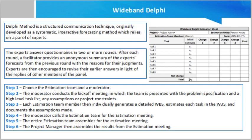Step 5.6 — the moderator collects the changed estimates from all team members and plots them on the round two line. In this round, the range will be narrower compared to the earlier one, as it is more consensus-based. Step 5.7 — the team then discusses the task modifications they have made and the assumptions.